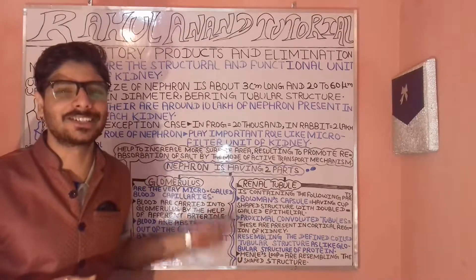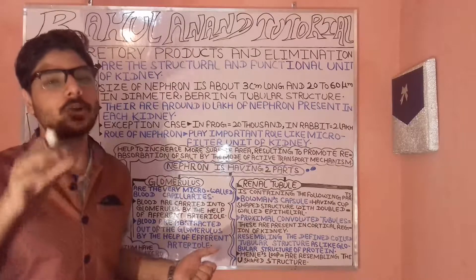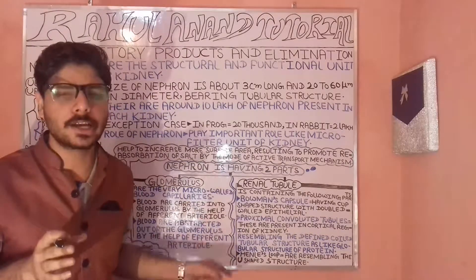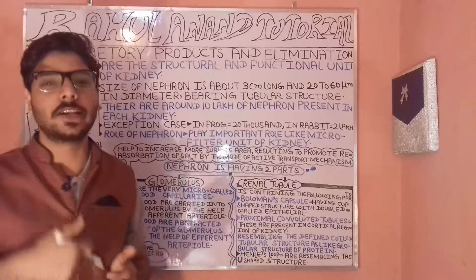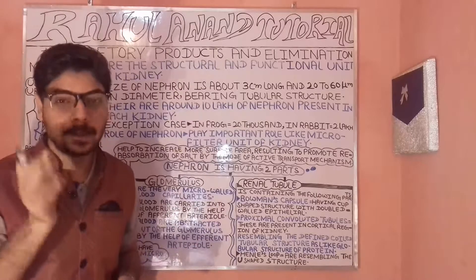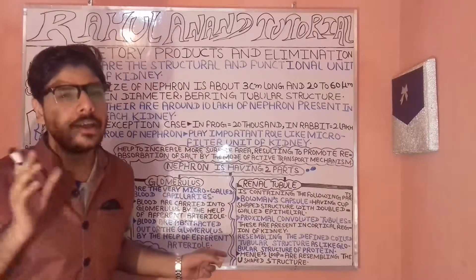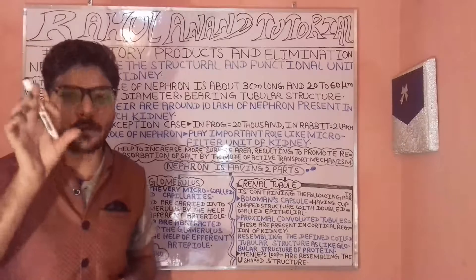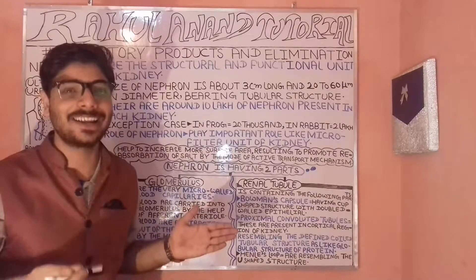The glomerulus is made up of thin blood capillaries. These are very fine capillary networks within the nephron.